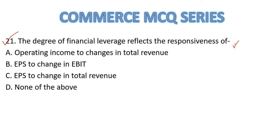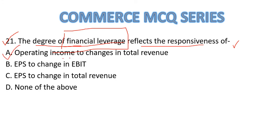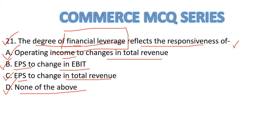Question 21: The degree of financial leverage reflects the responsiveness. Options: A — operating income to change in total revenue; B — EPS to change in EBIT; C — EPS to change in total revenue; D — none of the above. I am showing you the answer in the next five seconds.